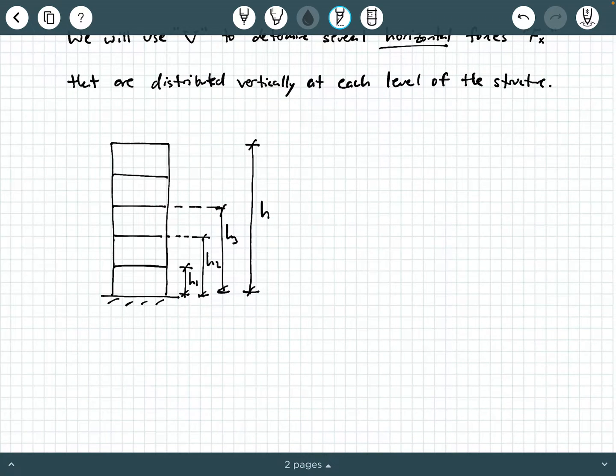So if you recall, we model this as what we call a lumped mass system, and so these are lumped together as masses at each level. And what are these masses or weights? We really express them as weights. These are the seismic weights at each level. So this would be W1, W2, W3, W4, W5. Each of those is a seismic weight.